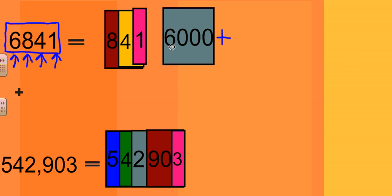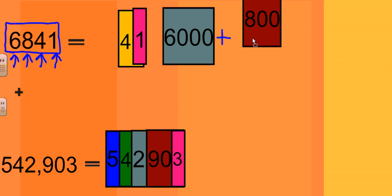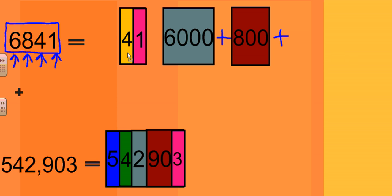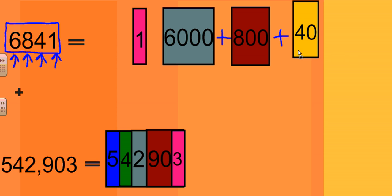The next step is to look at the next digit to the right, which is 8. It is in the hundreds place, so we take 8 times 100, which gives us 800. We write the addition sign to the right of that number. Working left to right again, we have a 4 in the tens place, and 4 times 10 is equal to 40.